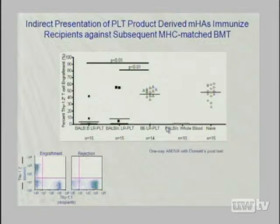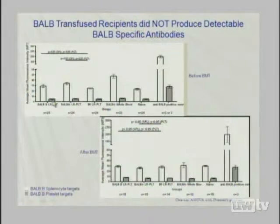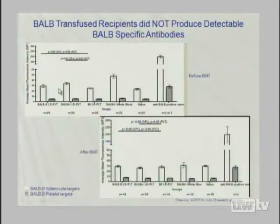Getting right to the point: if you use these platelets in the same experimental design, you get precisely the same result. BALB/b leukoreduced platelets in a naive mouse where engraftment would occur — if you give the BALB/b platelets, you get rejection. If you give BALB/c platelets, you get rejection. This is not a nonspecific effect of platelet transfusion-induced biology because when you give syngeneic platelets, you don't get rejection. We again looked and did not detect a significant antibody response in these animals.